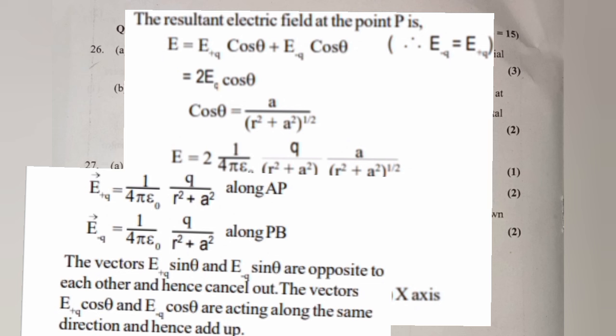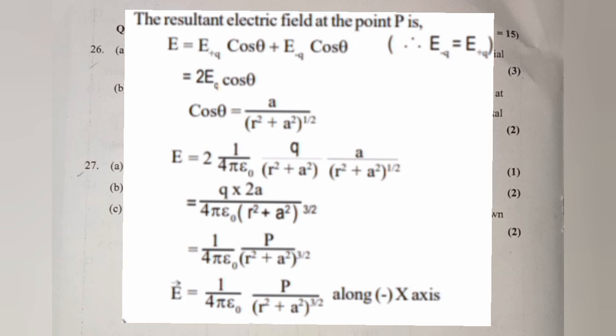cosθ = a/(r² + a²)^(1/2). Solving this, the total electric field at P is E = (1/4πε₀) × p/(r² + a²)^(3/2), where p is the electric dipole moment.